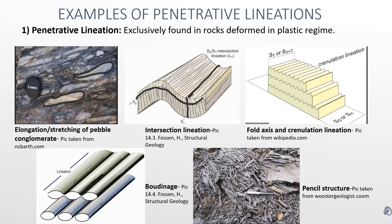The third one is crenulation lineations, which are closely associated with intersection lineations but are different as they are comprised of fold hinges, and the fold hinges are millimeter to centimeter long. The fourth one is boudinage, which are competent rock layers that have been stretched into segments. The last one is pencil structures, which are formed when foliation and bedding is prominent, and the rock has a tendency to break up as shown in the picture.